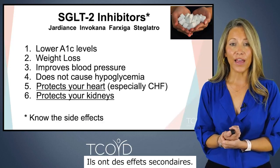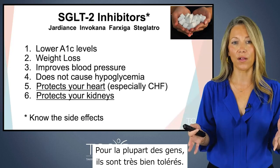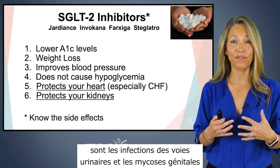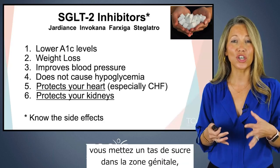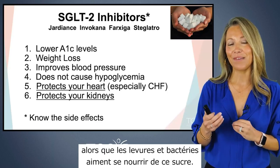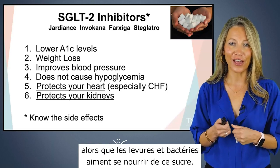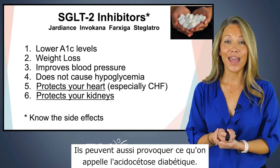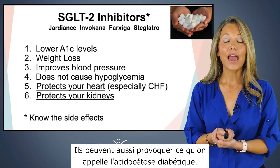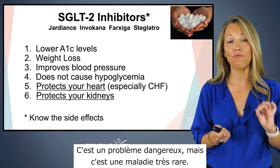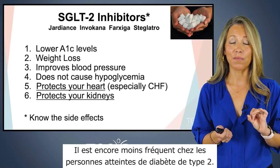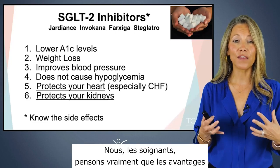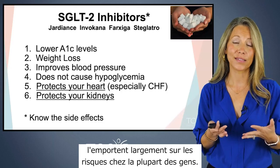SGLT2 inhibitors do have some side effects, though for most people they're tolerated really well. Some side effects include urinary tract infections and genital yeast infections, because you're putting sugar into the genital area and yeast and bacteria love to feed on that. Not too common though. They can also cause something called DKA or diabetic ketoacidosis — a dangerous but very rare problem, even less common in people with type 2 diabetes. Healthcare providers really feel the benefits far outweigh the risks in most people.